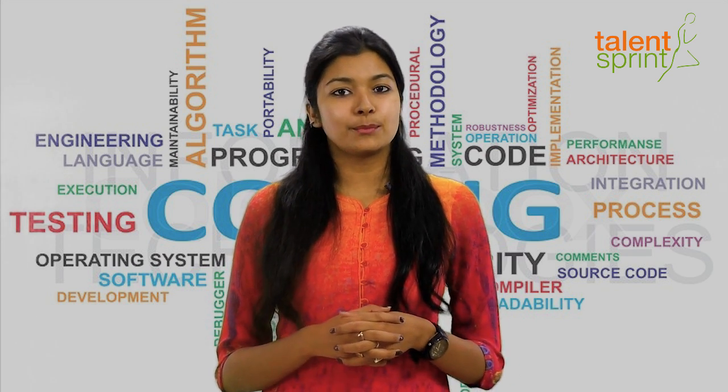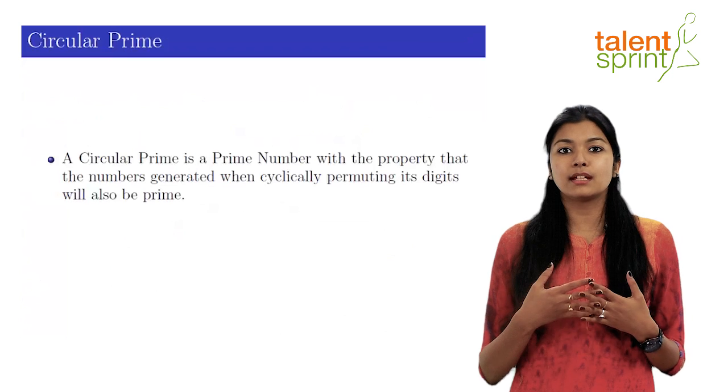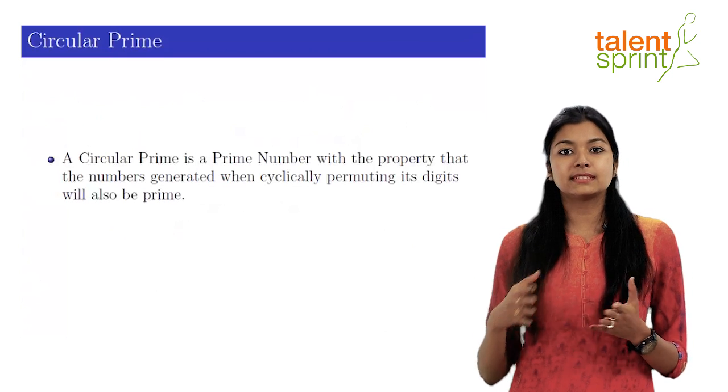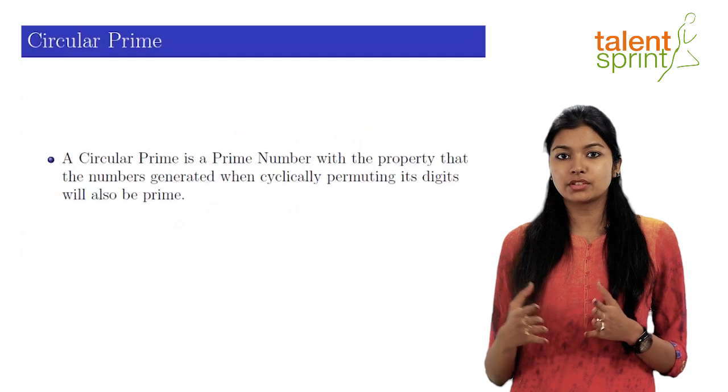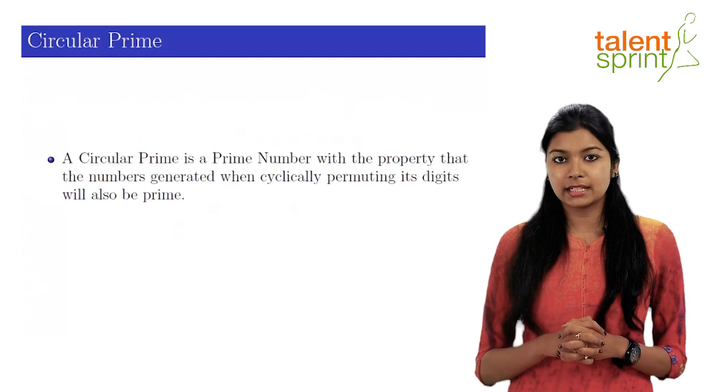In today's video, we are going to write a program to check if a number is circular prime or not. Let's first start by understanding what a circular prime actually is. A circular prime essentially is a prime number in which all the numbers generated by cyclically permuting its digits also end up being prime numbers. What do I mean by cyclically permuting?